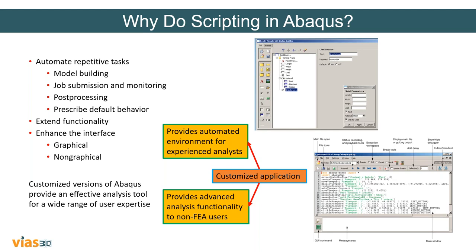You can also extend functionality by performing tasks that are very time-consuming in Abacus CAE. You can also enhance the interface by using graphical and non-graphical scripts. Graphical scripts are called GUI scripts — graphical user interface scripts — and non-graphical scripts are called kernel scripts. Also, the customized version of Abacus can provide an effective tool for a wide range of user expertise. Python scripts don't have to be super complex — even a non-expert in Abacus can create a simple script to make a model and run a simulation as a start of the learning process.